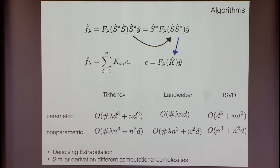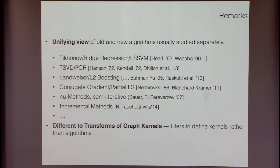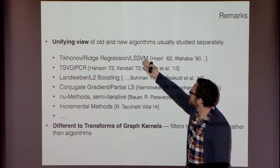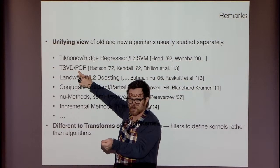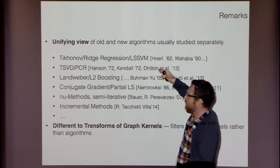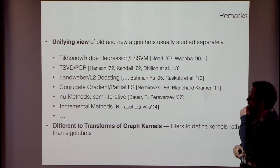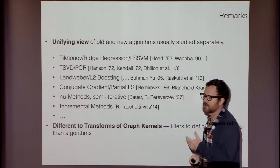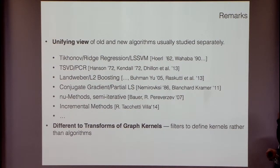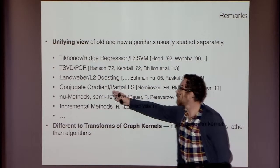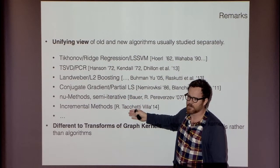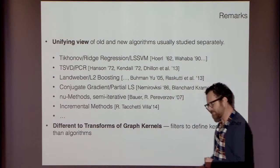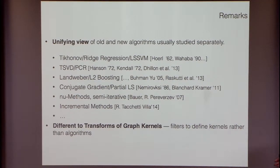Some of this is known, some is not, some has been rediscovered multiple times. Tikhonov ridge regression is very old; more recently called least-squares support vector machine. TSVD can be seen as principal component regression. The iterative method has been called L2 boosting, introduced in statistics by Bühlmann and Yu. Conjugate gradient turns out to correspond to theoretical partial least squares. You can also consider acceleration and incremental methods — the list of variants is very long.